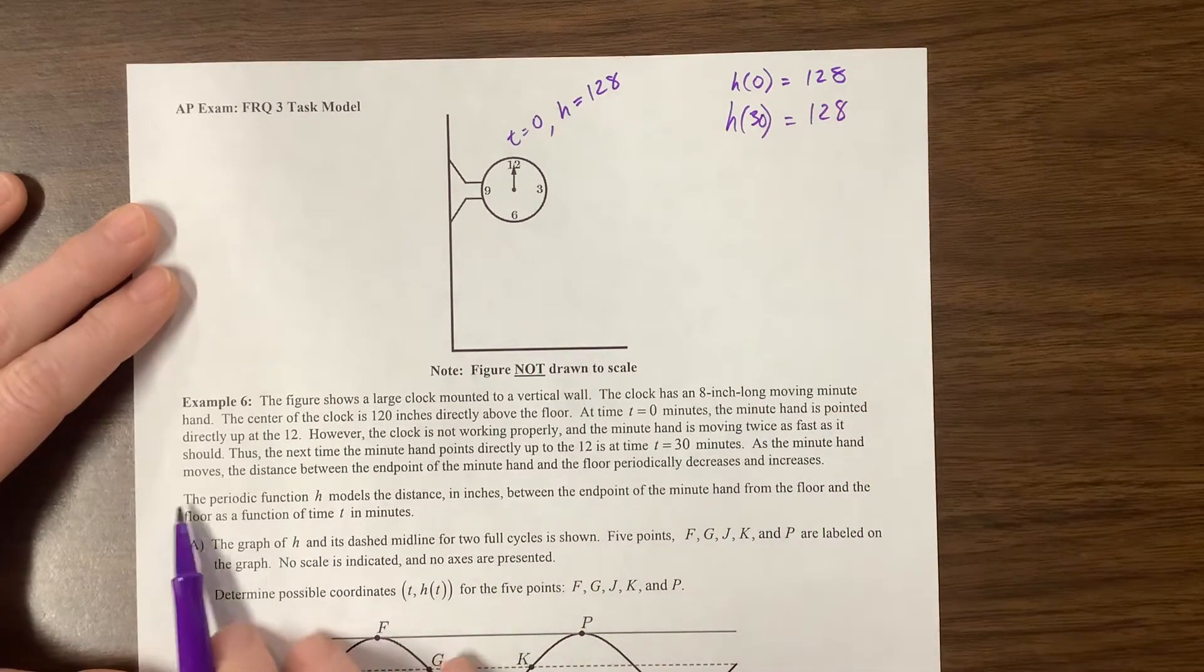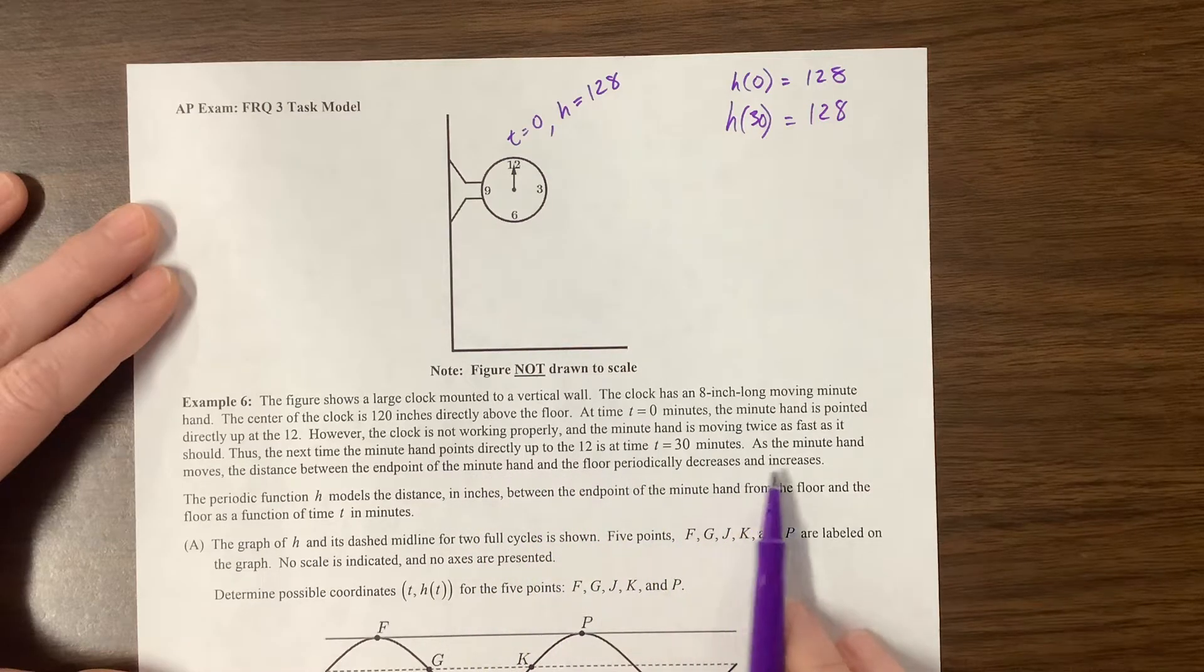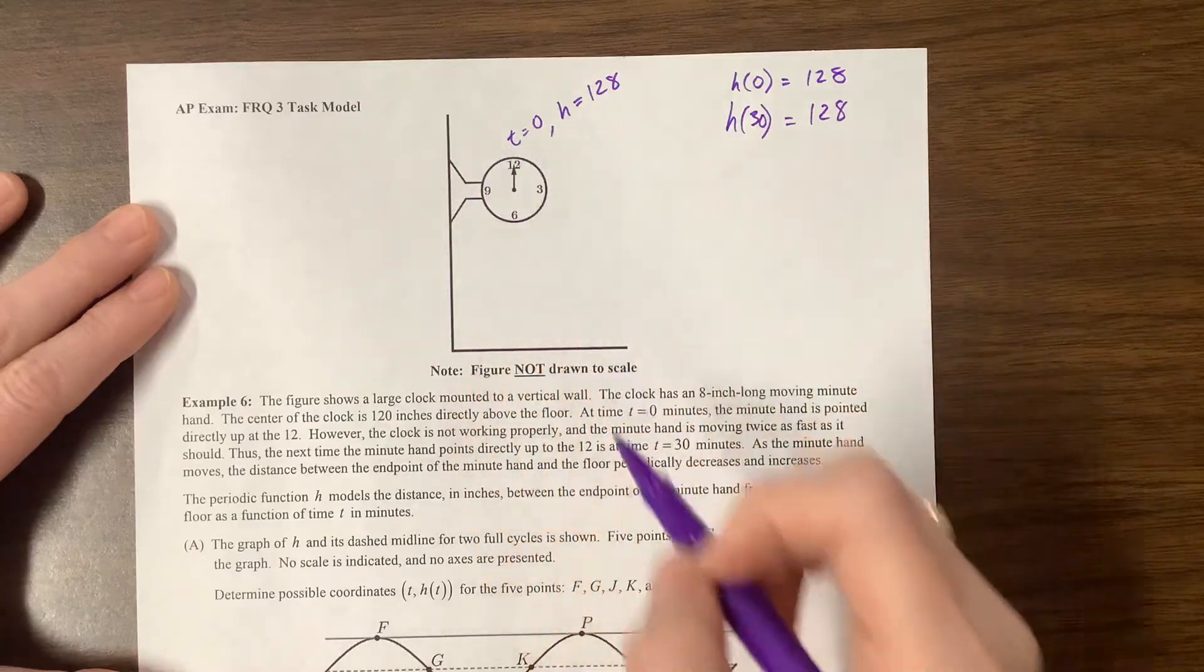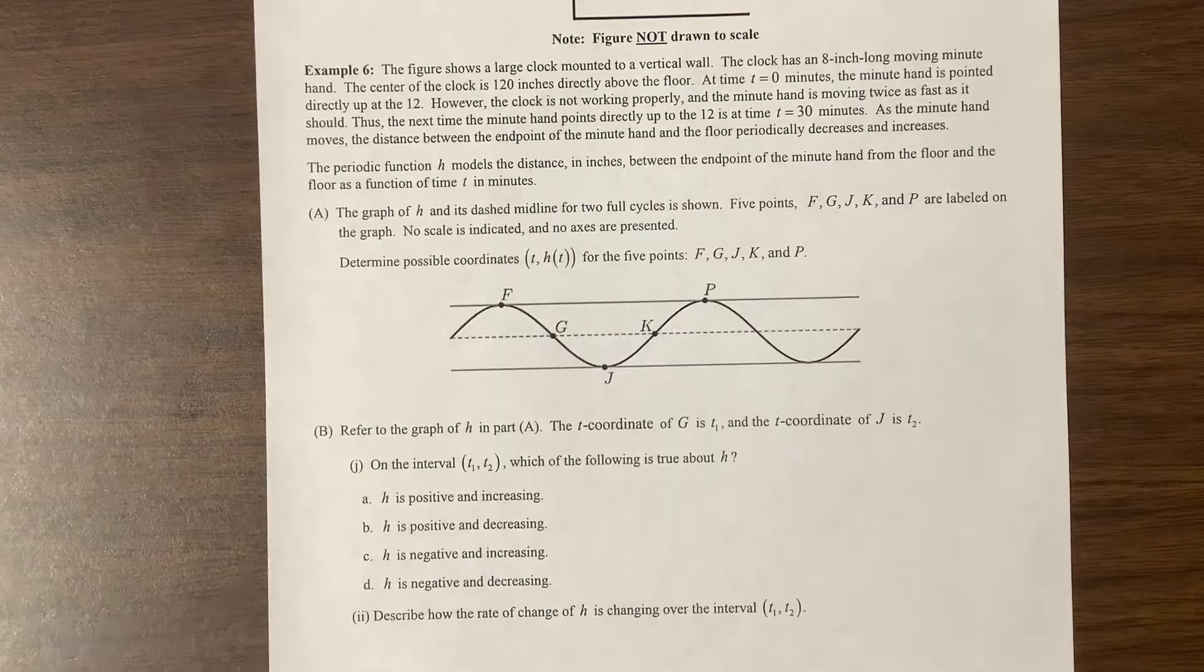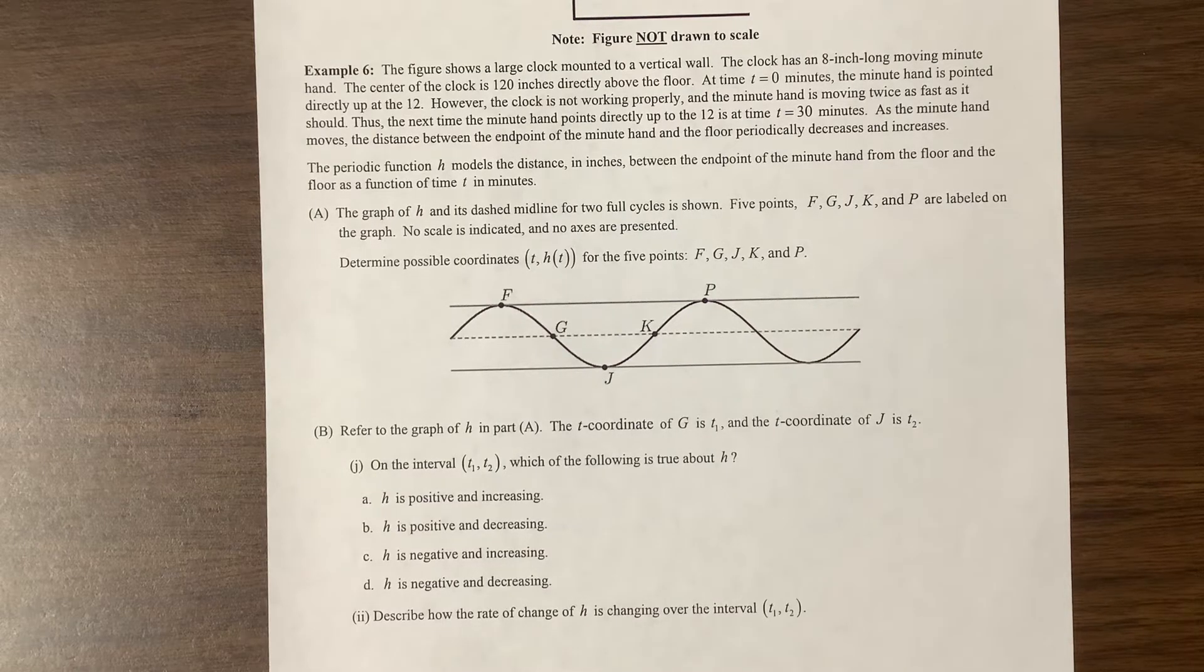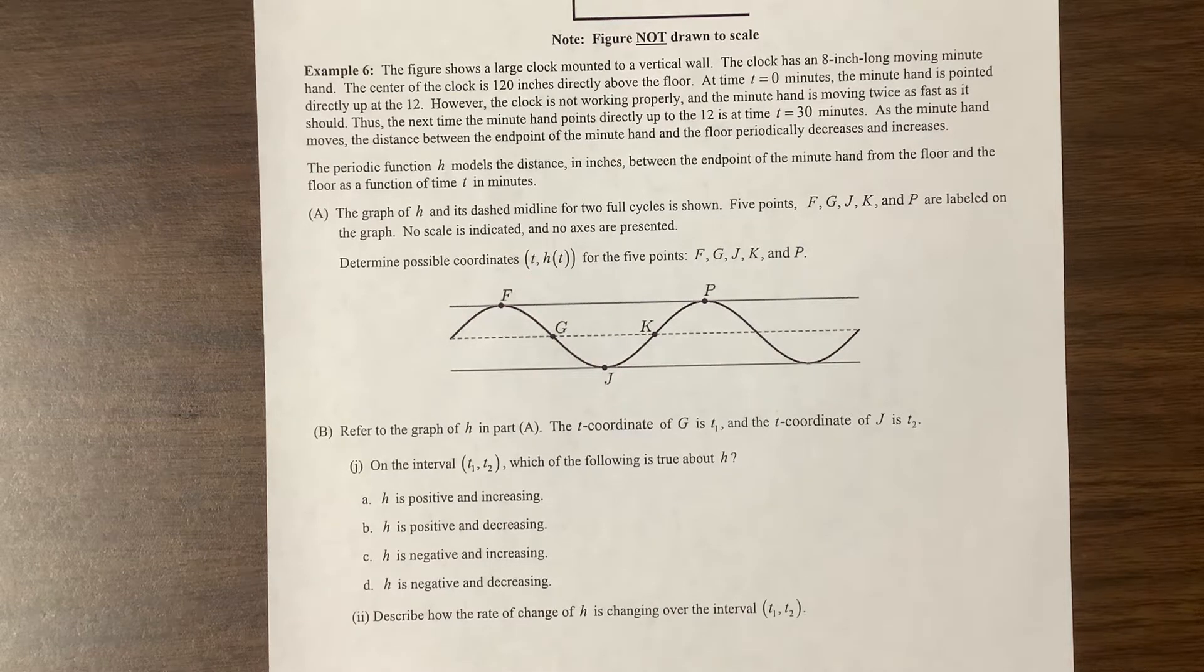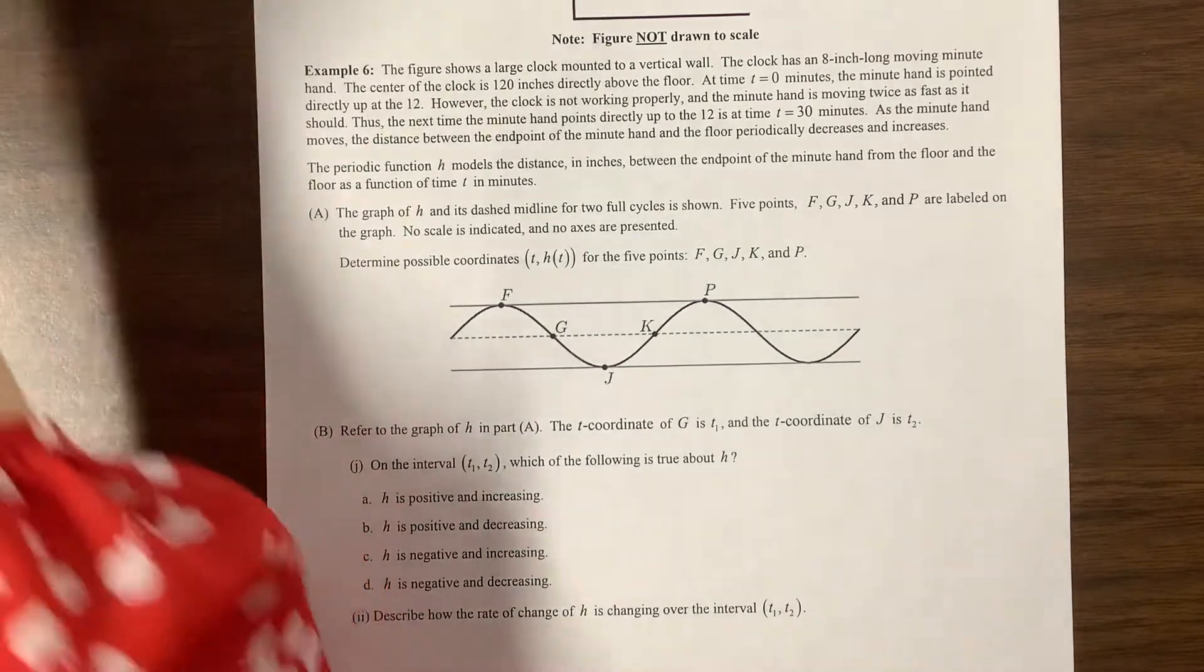As the minute hand moves, the distance between the end points of the minute hand and the floor periodically decrease and increase. So this is moving in a periodic fashion, so it's going to start to model our sine or cosine curve. Sine is cosine shifted and cosine is sine shifted, so it makes that sinusoidal curve.